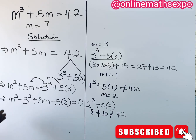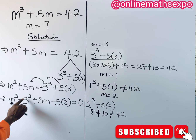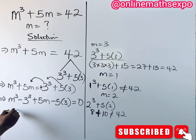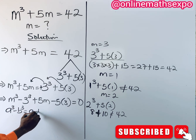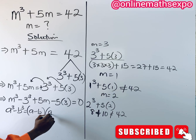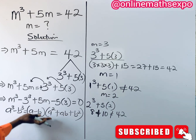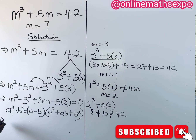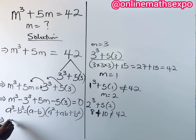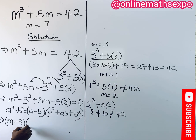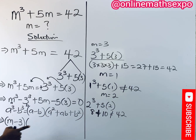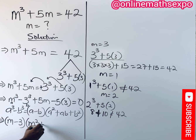You observe that this has led us to a difference of two cubes. Quickly recall that for every a³ minus b³ it is given as (a minus b)(a² plus ab plus b²). Applying this here, m³ minus 3³ becomes (m minus 3)(m² plus 3m plus 3²), where a is m and b is 3.